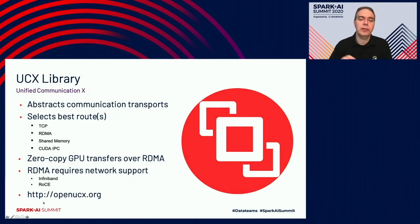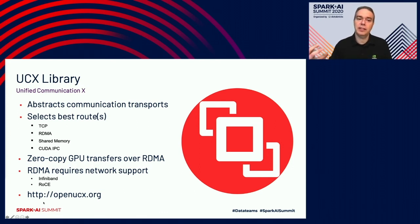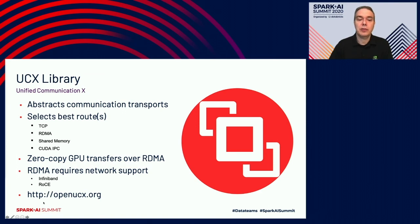With all these different transfers — GPU memory to GPU memory, host memory to GPU memory, GPU with RDMA, GPU with TCP — how can we manage all those transports? That's where UCX comes in. UCX stands for Unified Communication X. It's an open source, open consortium that abstracts communication transports. You set up endpoints and tell UCX to send from one endpoint to another, and it selects the best routes available — it might even split across more than one route for higher bandwidth. It supports TCP, RDMA, shared memory, and CUDA IPC for GPU transfers. Importantly, it supports zero-copy GPU transfers over RDMA. Note that RDMA does require network support such as InfiniBand or RoCE. Visit openucx.org for more information.